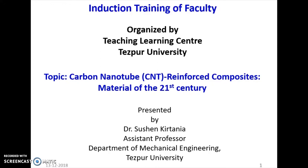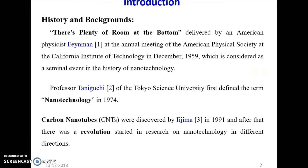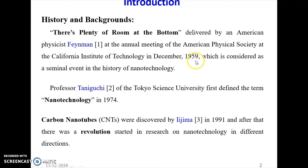Another question is: what is nano? Carbon nanotube — what is nano? So we are going for a background about the nanotube. There are plenty of room at the bottom — a lecture delivered by the American physicist Feynman at the California Institute of Technology in December 1959, which is considered as a seminal event in the history of nanotechnology. Professor Tanuguchi of Tokyo University first defined the term nanotechnology in 1974. Carbon nanotube was discovered by Iijima in 1991, and after that, a revolution started in research on nanotechnology in different directions. Though the research started on carbon nanotechnology in 1991, the concept was delivered by Feynman in 1959.